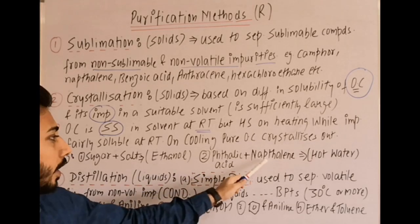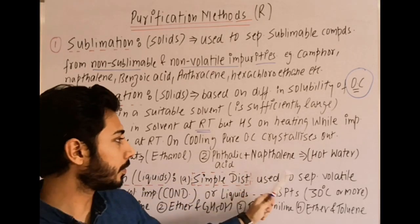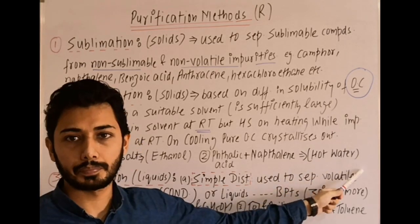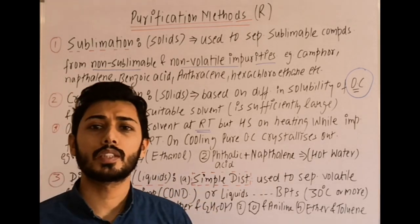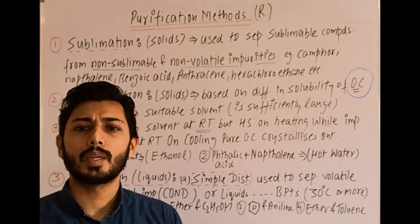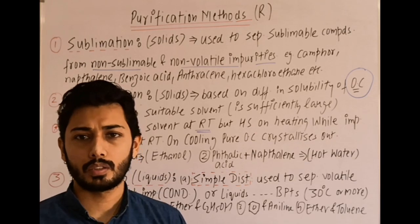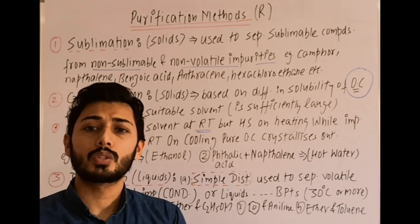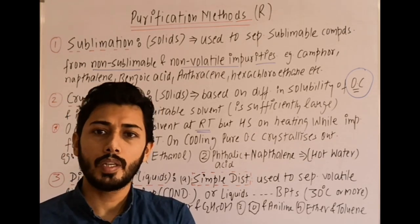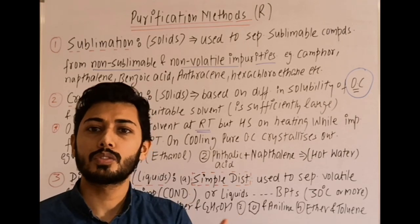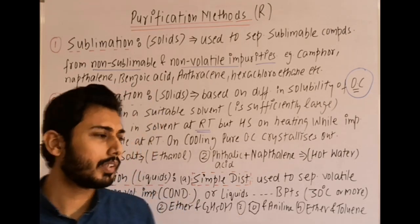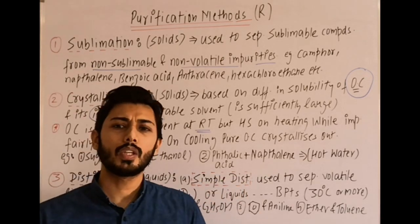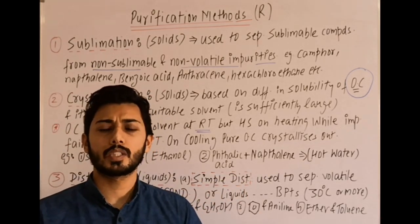Another example: phthalic acid and naphthalene can be separated using hot water. There is also fractional crystallization, in which two or more organic compounds soluble in the same solvent are separated based on their difference in solubility — one is more soluble, the other less soluble.